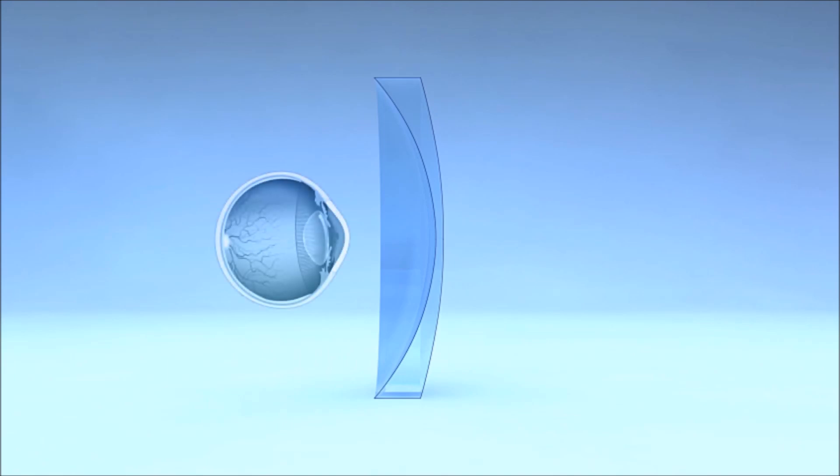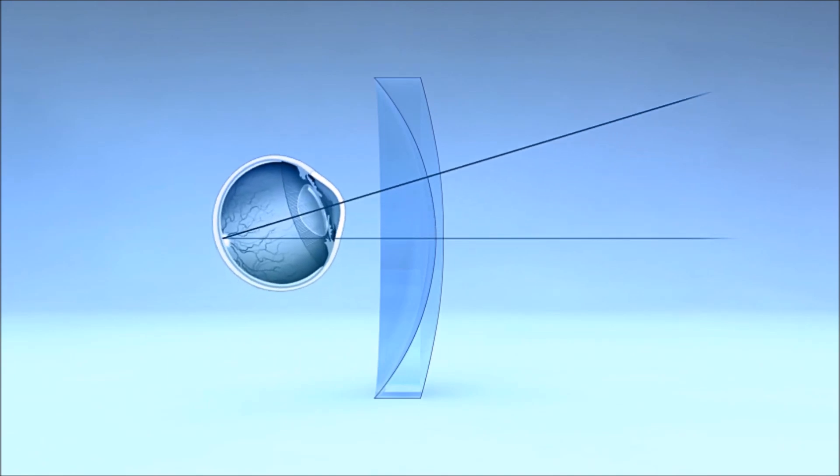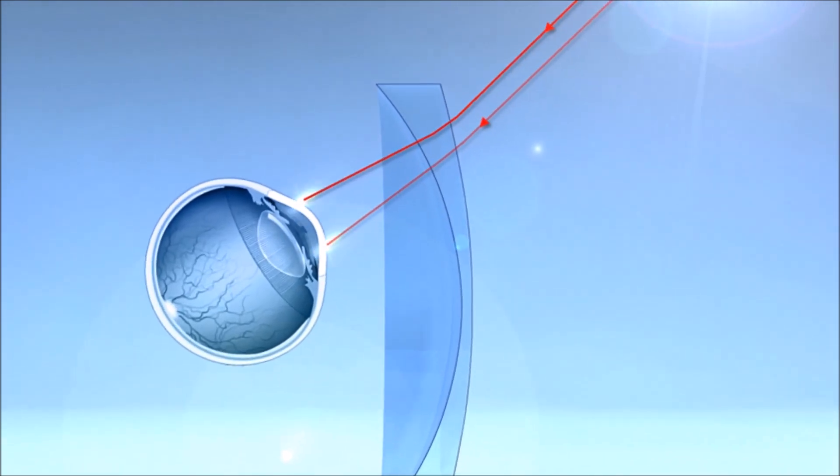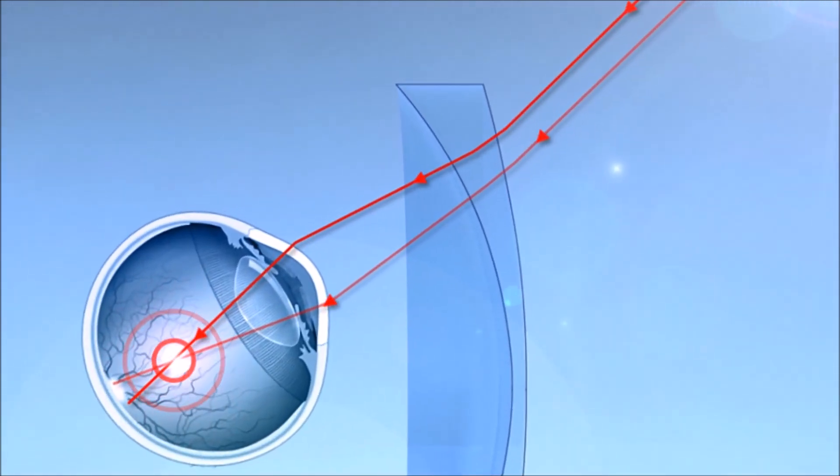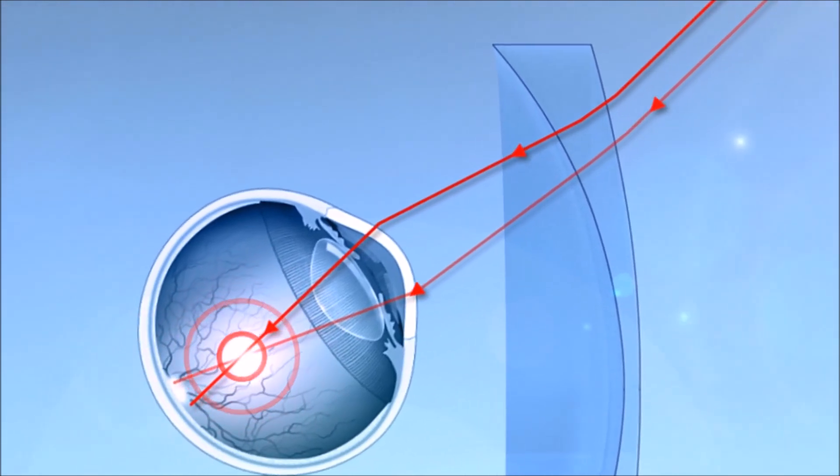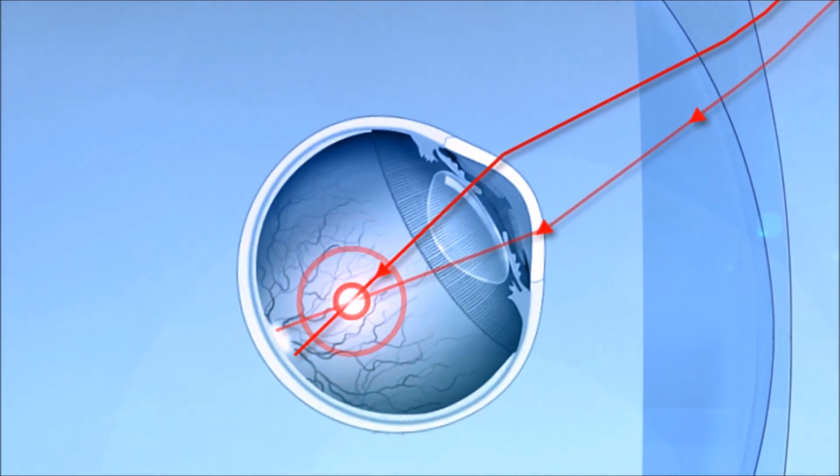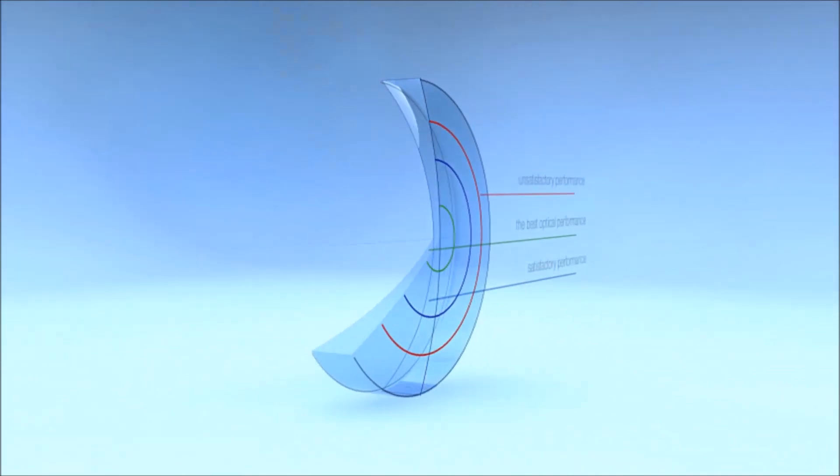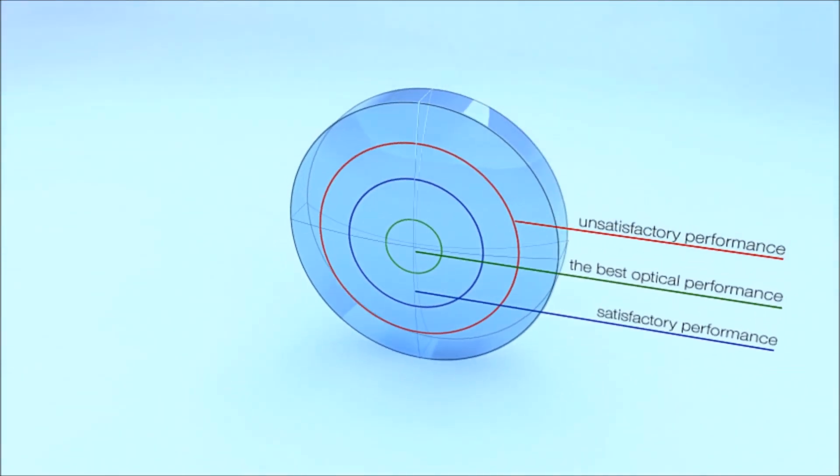Lens performance becomes lower as we look away from the optical center. This is a result of oblique aberration that appears when light is refracted obliquely, which happens whenever we look in lateral gaze directions. Those lateral rays do not focus on the retina. Oblique aberration reduces the quality of vision outside the center of the lens.